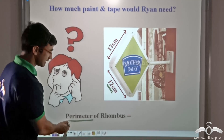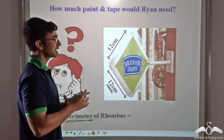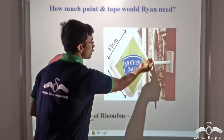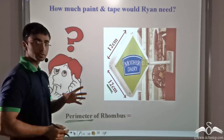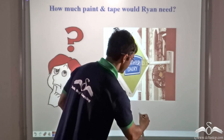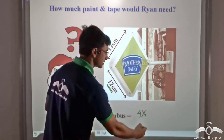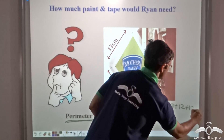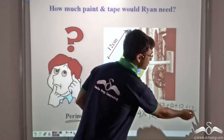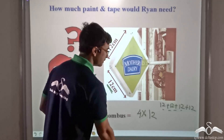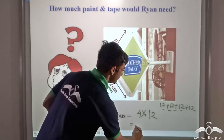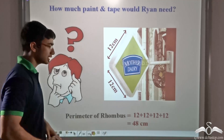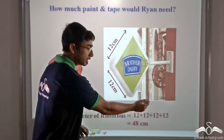Firstly we proceed with the calculation of the perimeter of a rhombus. Just like it is true for any quadrilateral, it is also true for a rhombus that the perimeter is nothing but the sum of all four sides, and since it is a rhombus all four sides are equal. So we can write that the perimeter is 4 into the side, that is 4 into 12, which gives us 48 centimeters. So the perimeter of the rhombus is 48 centimeters.